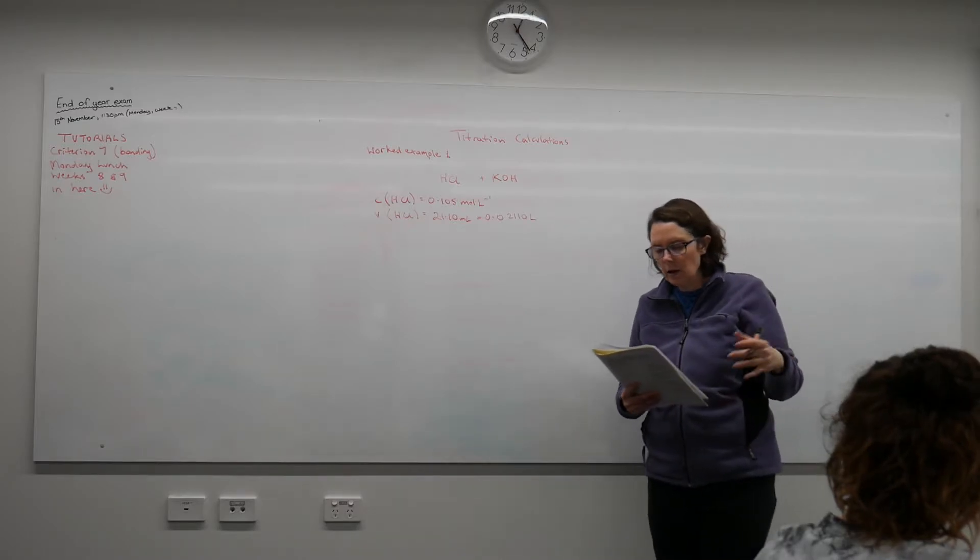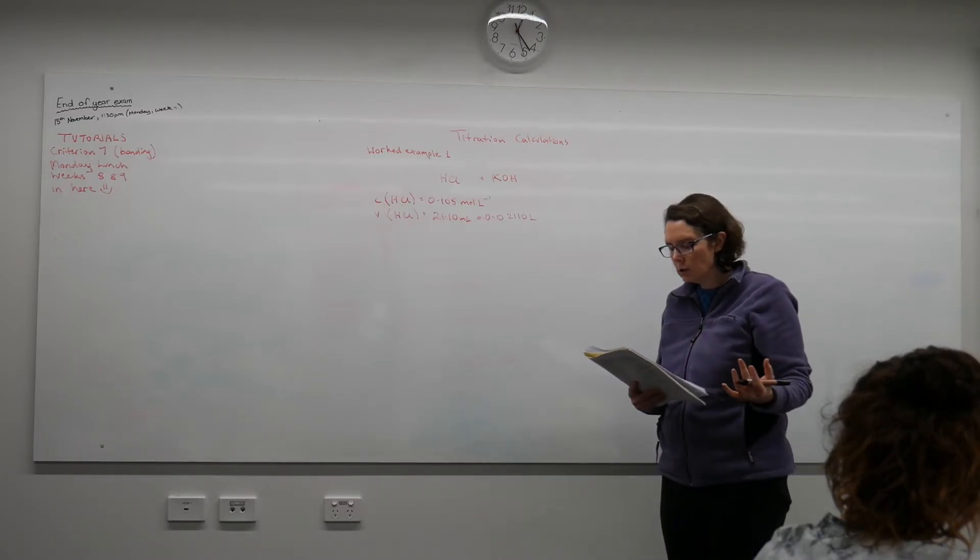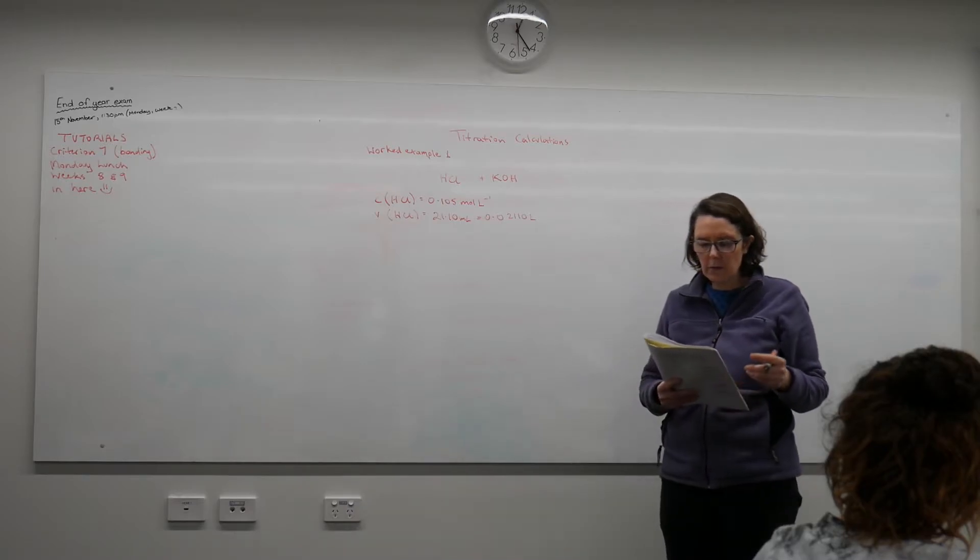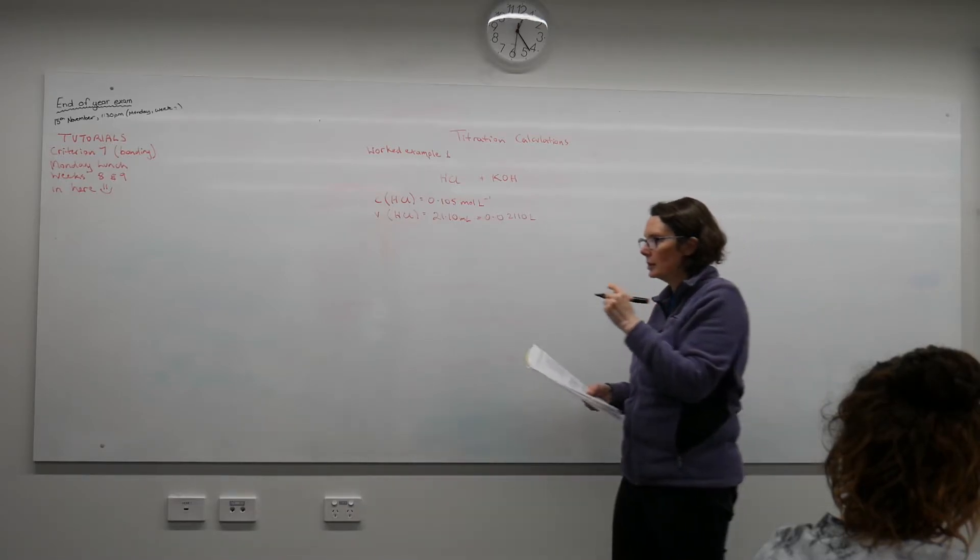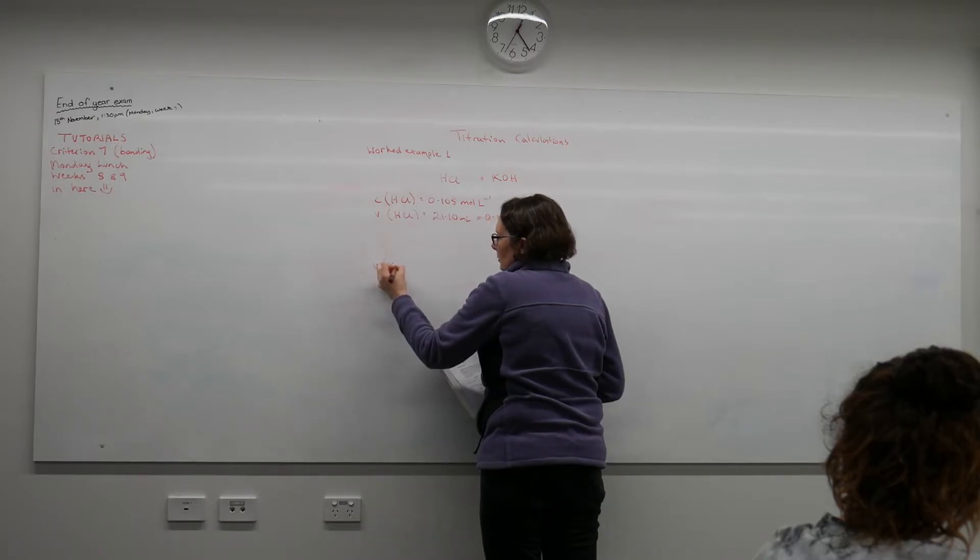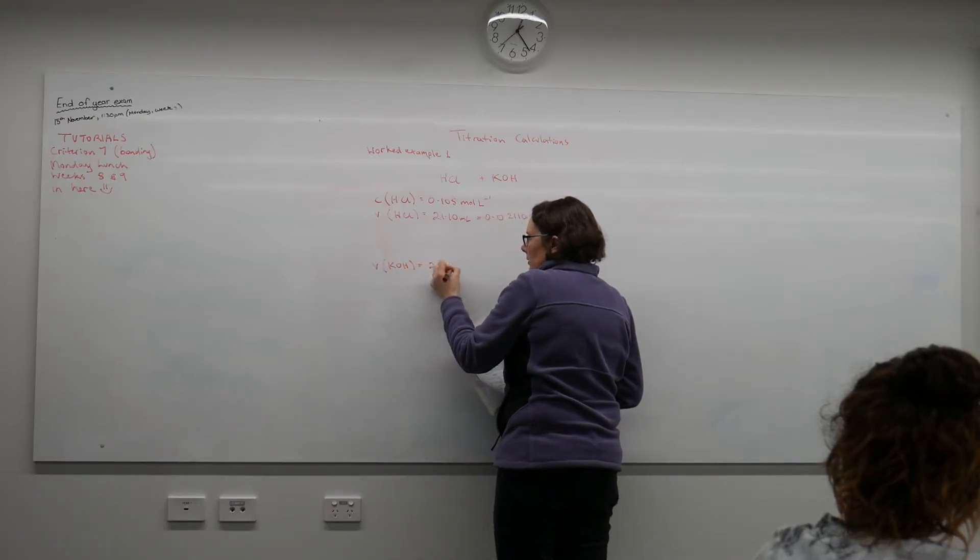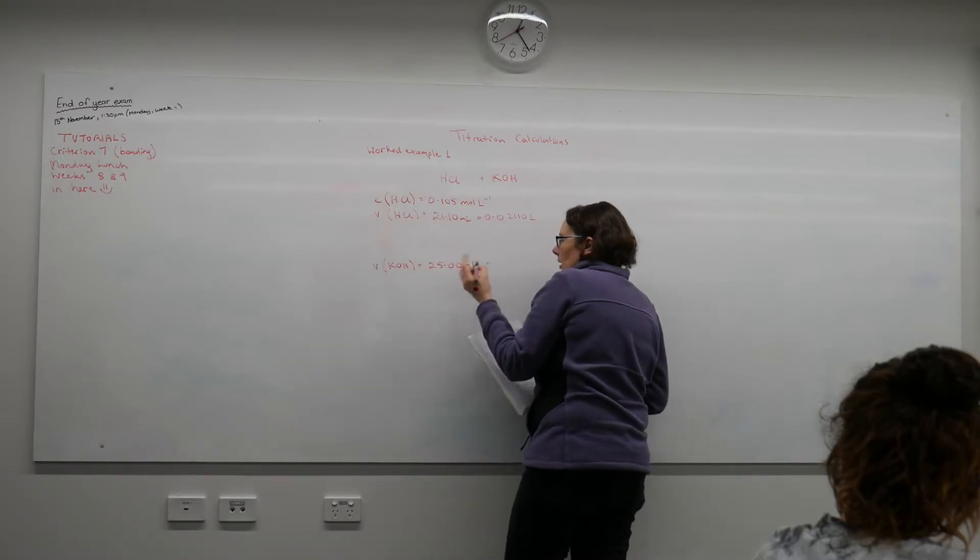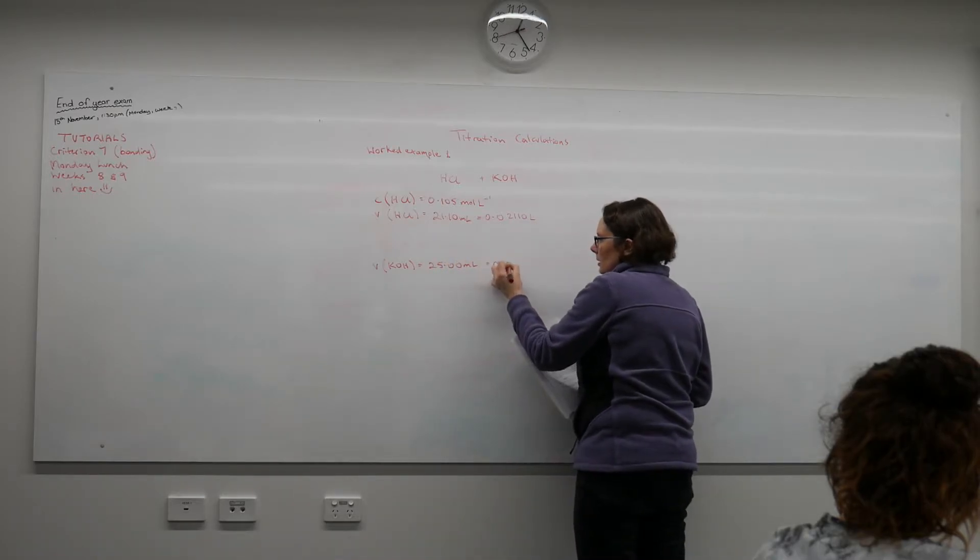And we need to neutralize a 25 mL aliquot of potassium hydroxide. So that tells me that my volume of potassium hydroxide is 25 mL, which again we must convert to litres.